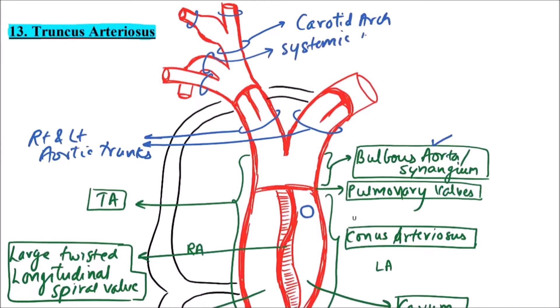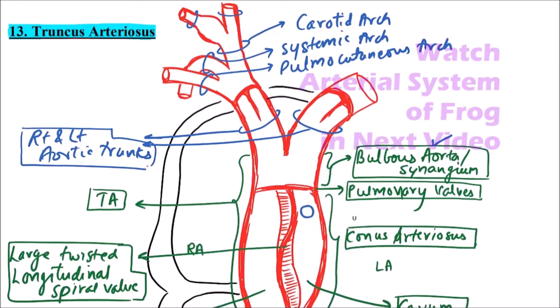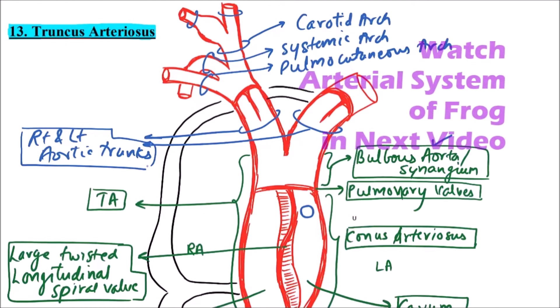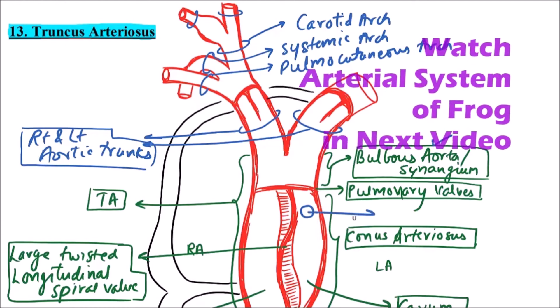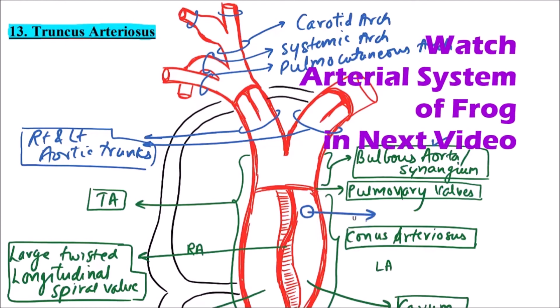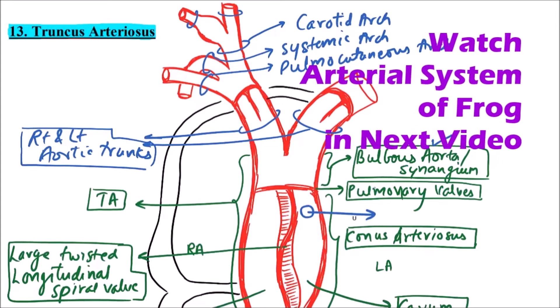And this arch is palmo cutaneous arch. So each aortic trunk divides into three arches. These three arches will be discussed in detail in the next video. And this cavity which is being observed in this diagram is common opening for palmo cutaneous arches.